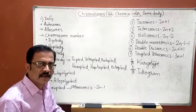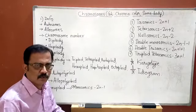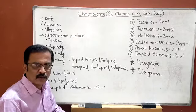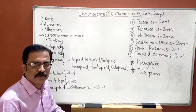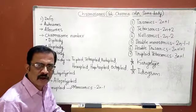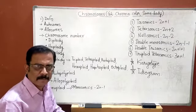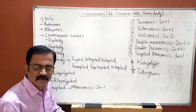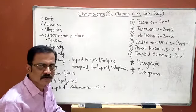In human beings, there are 46 chromosomes, in which 22 pairs are autosomes and one pair is the sex chromosome, represented as X and Y. 22 plus XX for females, and 22 plus XY for males.